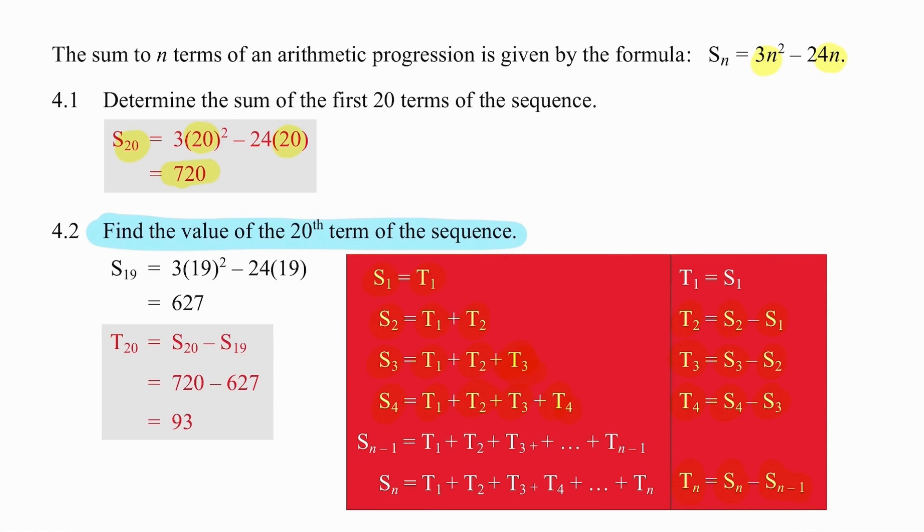We want to work out the value of the 20th term. We already have the sum of 20 terms. What we're going to do now is work out the sum of 19 terms by using the same formula and substituting in 19. We simply subtract and take the sum of 20 terms, subtract the sum of 19 terms, and the difference between S20 and S19 is the value of T20. This is a very popular question. So pause the video and look at it again and make sure that you understand it.